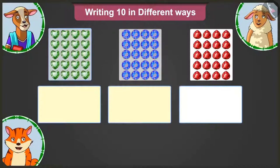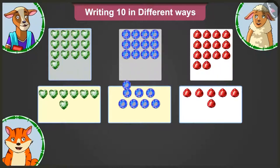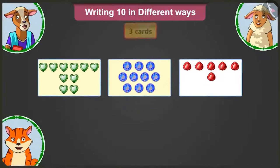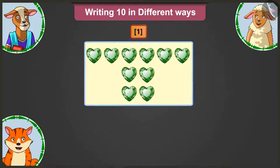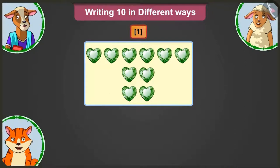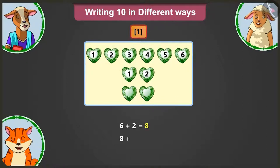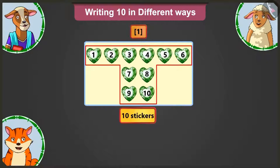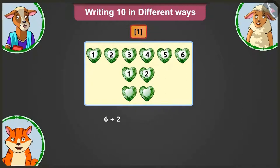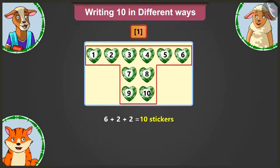Ma'am has some stickers and will stick them on cards in three different ways. On the first card, there are six stickers in the first row, two in the second row and two in the third row. Adding two to six gives eight, and adding two to eight gives ten. This card has ten stickers in total. We write the sum as: six plus two plus two equals ten stickers.